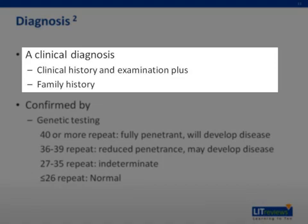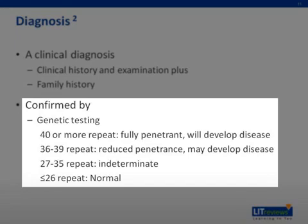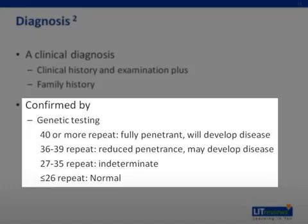The diagnosis of Huntington's in the past has been purely clinical, based on a patient's history — especially family history — along with physical examination. Since the onset of genetic testing, this has become increasingly important in confirming the diagnosis. Genetic testing evaluates the CAG repeats on chromosome 4. A patient with 40 or more repeats has fully penetrant disease, meaning they will develop the disease. 36 to 39 CAG repeats indicates reduced penetrance and the patient may develop the disease. 26 to 35 CAG repeats are indeterminate, and less than 26 CAG repeats are considered normal.